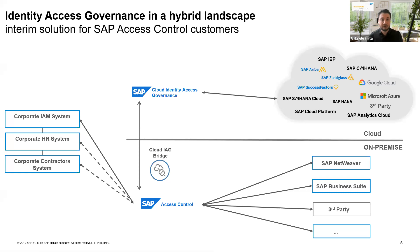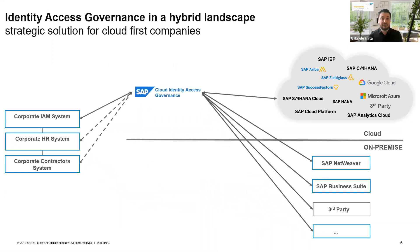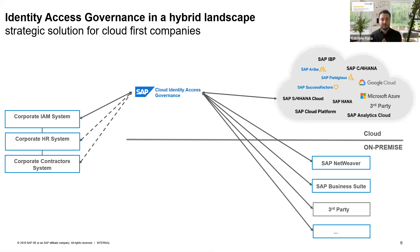The second option is more suited to customers who are starting their SAP journey now, or who simply want to switch their current access governance solution to an SAP solution. For those customers, IAG can actually provision and manage access to both cloud solutions as well as on-premise solutions. So if you run ECC on-premise, or a BI system on-premise, or a third-party system on-premise, you could still use IAG to manage those users.